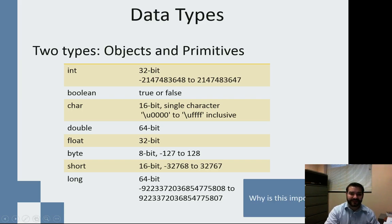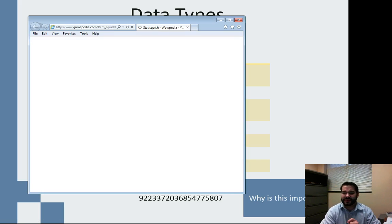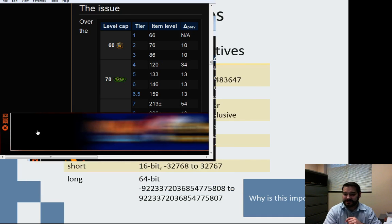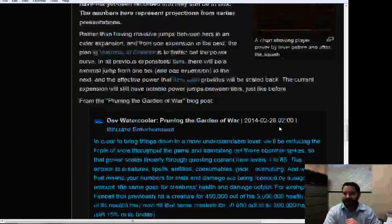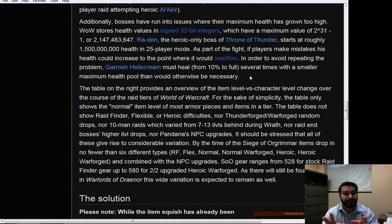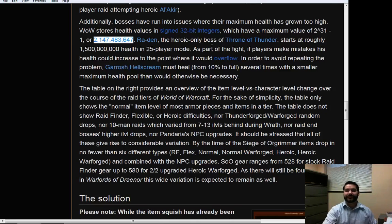Why is this important? Let's take for example, hopefully you know someone who is a longtime sufferer of World of Warcraft. It's a good real-life application. If we take a look at this paragraph right here, bosses have run into issues where their maximum health has grown too high. World of Warcraft has literally designed their bosses to be too powerful. Why? Because WoW stores health, the health variable in their video game, as a signed 32-bit integer. That only has a maximum cap of 2.1 billion numbers.